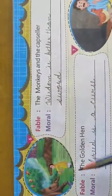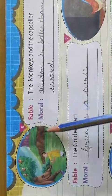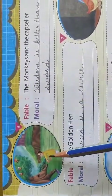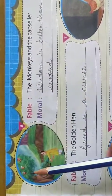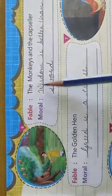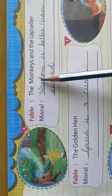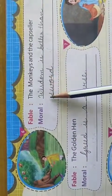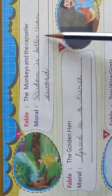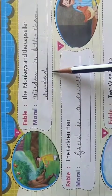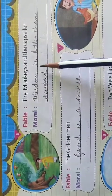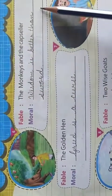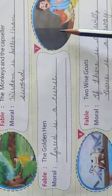See the next page. Number 6: The Monkeys and the Capsular. The moral is: wisdom is better than the sword.